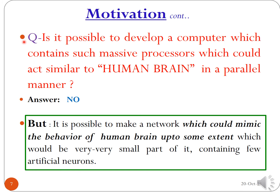The question arises: is it possible to develop a computer which contains such massive parallel processors that could act similar to the human brain? The answer is no — we cannot make a computer with billions of massive processors. However, it is possible to make a network that could mimic the behavior of the human brain to some extent, a very small part of it, containing a few artificial neurons.